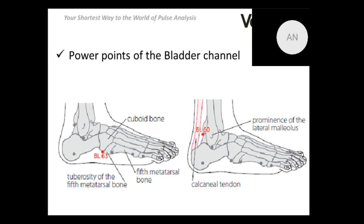The next point is point number 60 — the Kunlun point — already mentioned at the beginning of the webinar as very powerful. Why is it called Kunlun? There is a mountain in China with that name, but this point carries the name due to ancient Chinese myths about a celestial mountain called Kunlun, which is the home of deities including the goddess mother Xi Wang Mu. She is famous for the ability to share eternal life.